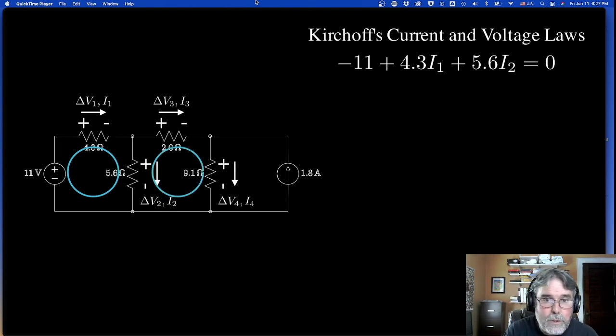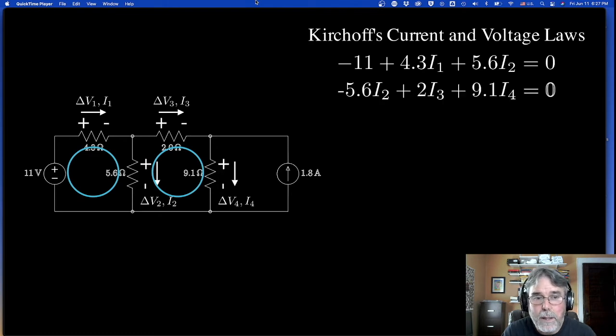Let's do the next loop. The next loop, I'm going to go around this way. So I'm going to start at the 5.6. So I'm going to go minus 5.6 times I2 plus 2 times I3 plus 9.1 times I4. So those are Kirchhoff's voltage laws applied to those two loops. Now I want you to notice something. I've got two equations now, but I've got four unknowns because I've got I1, I2, I3, and I4. So that's not enough equations to solve for four unknowns. So I need two more equations. And that's where Kirchhoff's current law comes in.